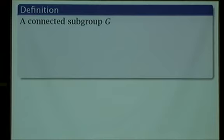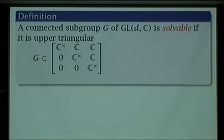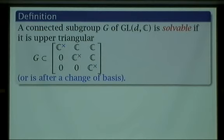Before we do that, let me give you the definition of a solvable group. This definition probably isn't the one you learned in graduate school, but it works. If you've got a connected Lie group of matrices, it's easy to see if it's solvable: it's solvable if and only if it's upper triangular. To be solvable means that G is contained in the group of upper triangular matrices — or it'll be upper triangular after you change the basis. That's actually equivalent to the usual definition involving chains of subgroups with abelian quotients.